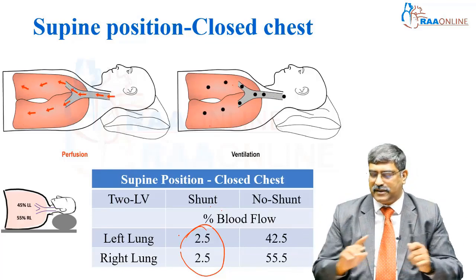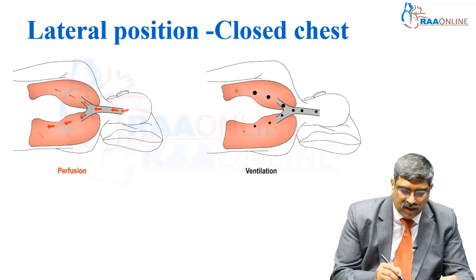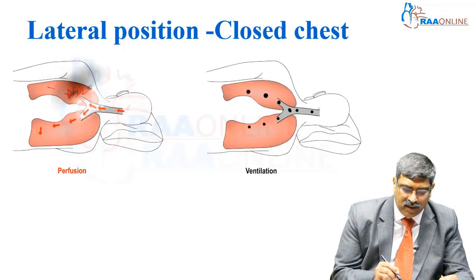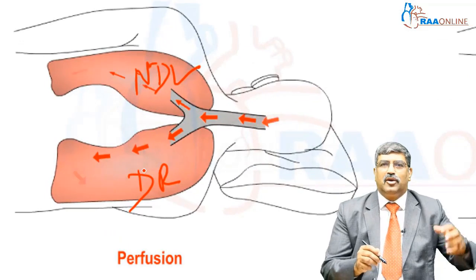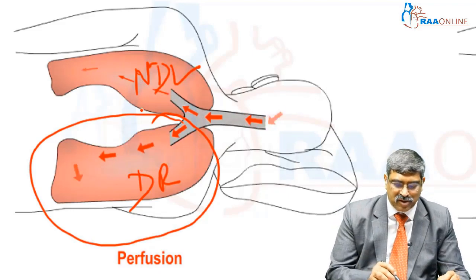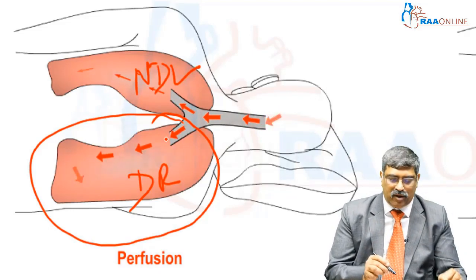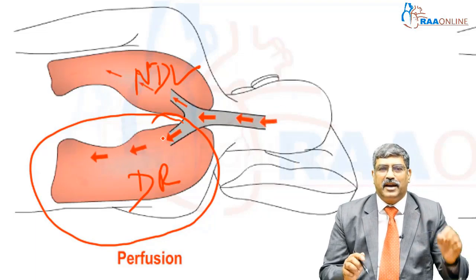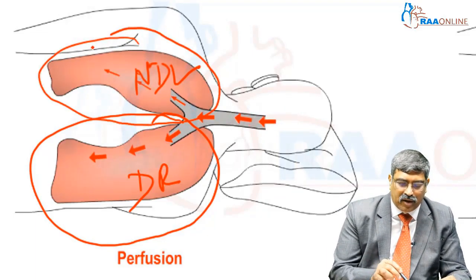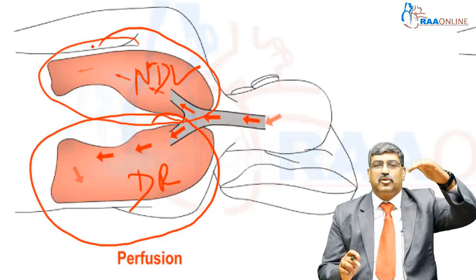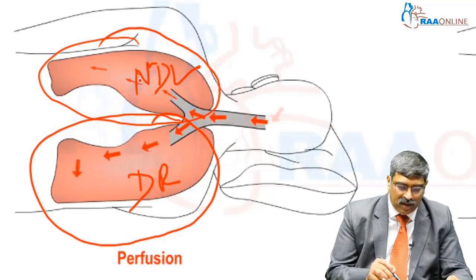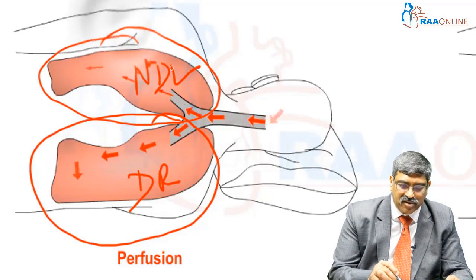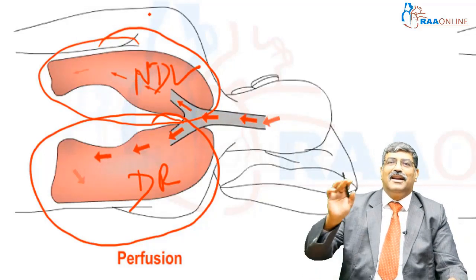Now coming to lateral position with closed chest. This is the non-dependent left lung and this is the dependent right lung. Being dependent, due to gravity the right lung will receive more perfusion — shown by a slightly broader red arrow mark. The left lung being non-dependent will receive less perfusion, shown by a narrower red arrow mark. So the dependent lung receives more perfusion and the non-dependent lung receives less.